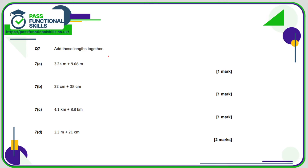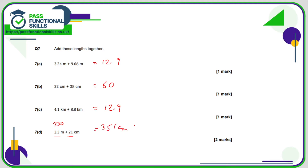Question 7 — we can use a calculator. Type in 3.24 plus 9.66 and you'll get 12.9. 22 plus 38 is 60. 4.1 plus 8.8 is 12.9. For 3.3 plus 21, we need to be careful because 3.3 is in meters and 21 is in centimeters. We can convert: 3.3 meters is 330 centimeters, so 330 plus 21 is 351 centimeters, or in meters, 3.51 meters.